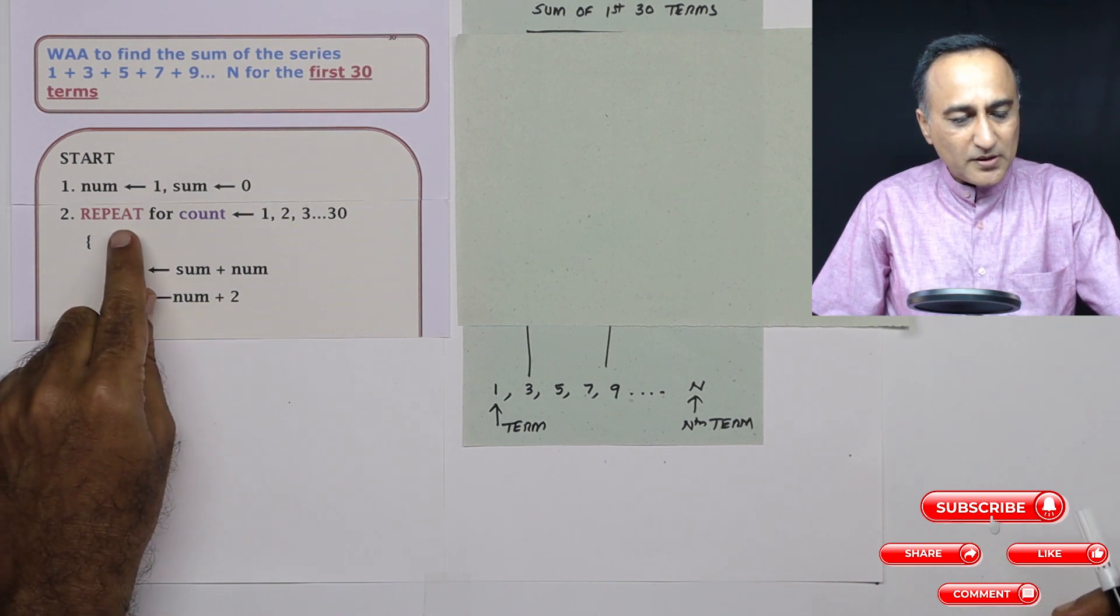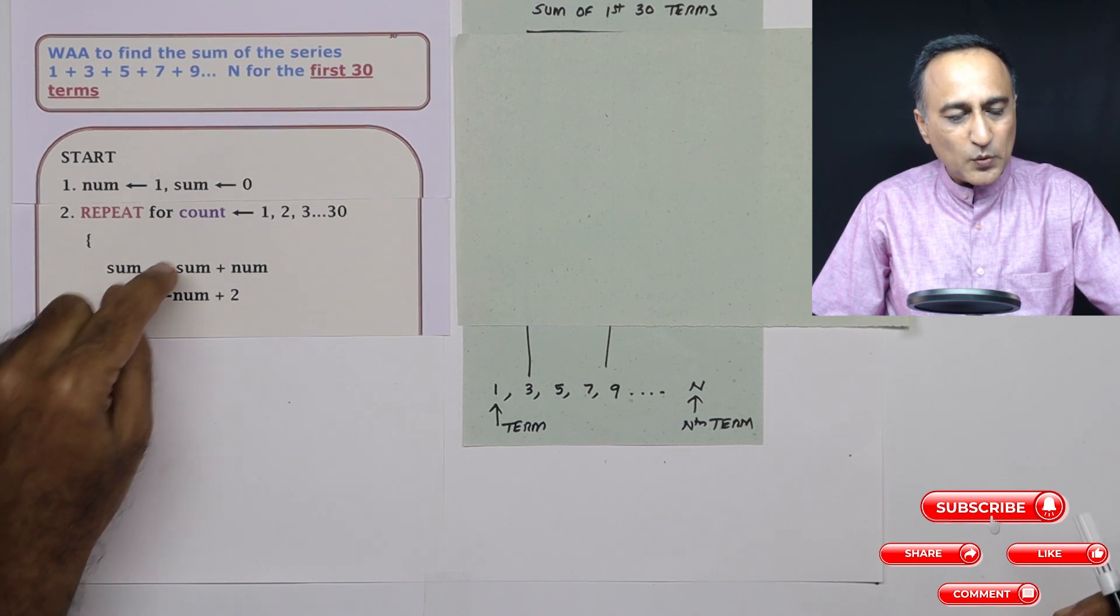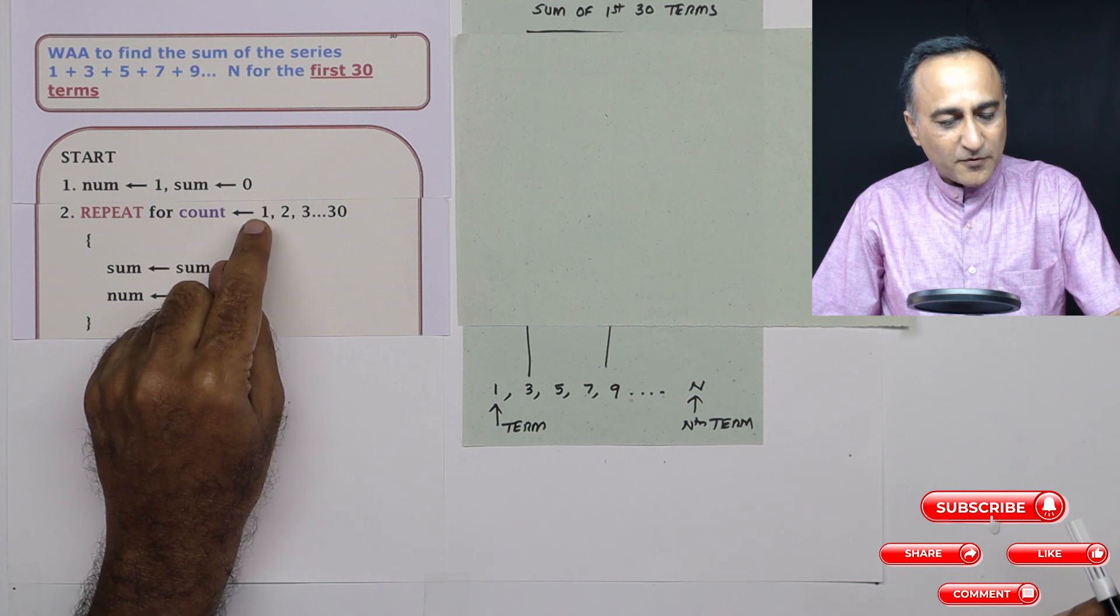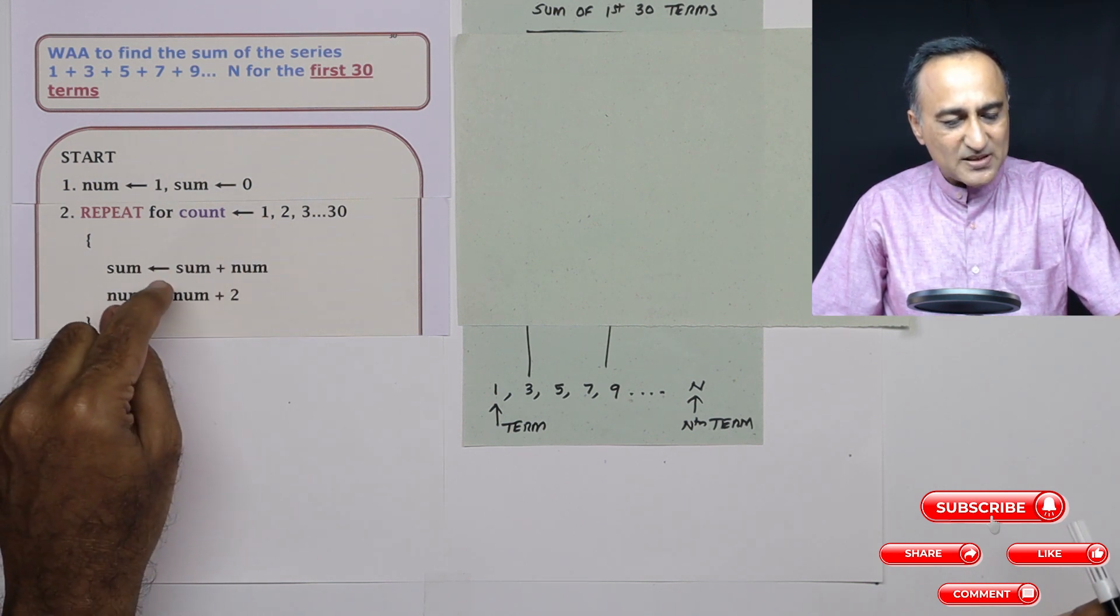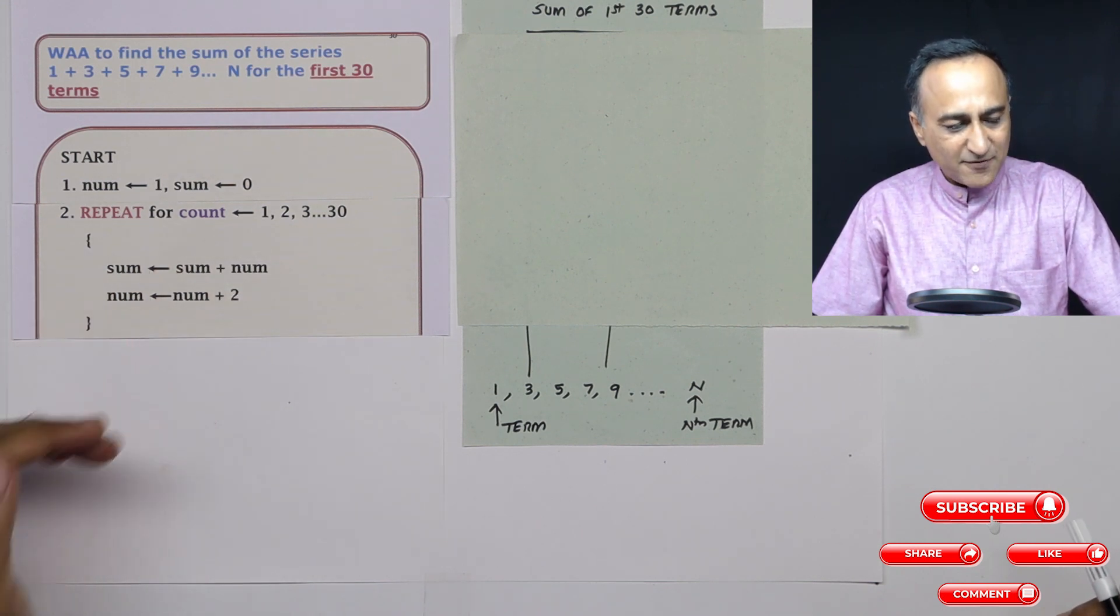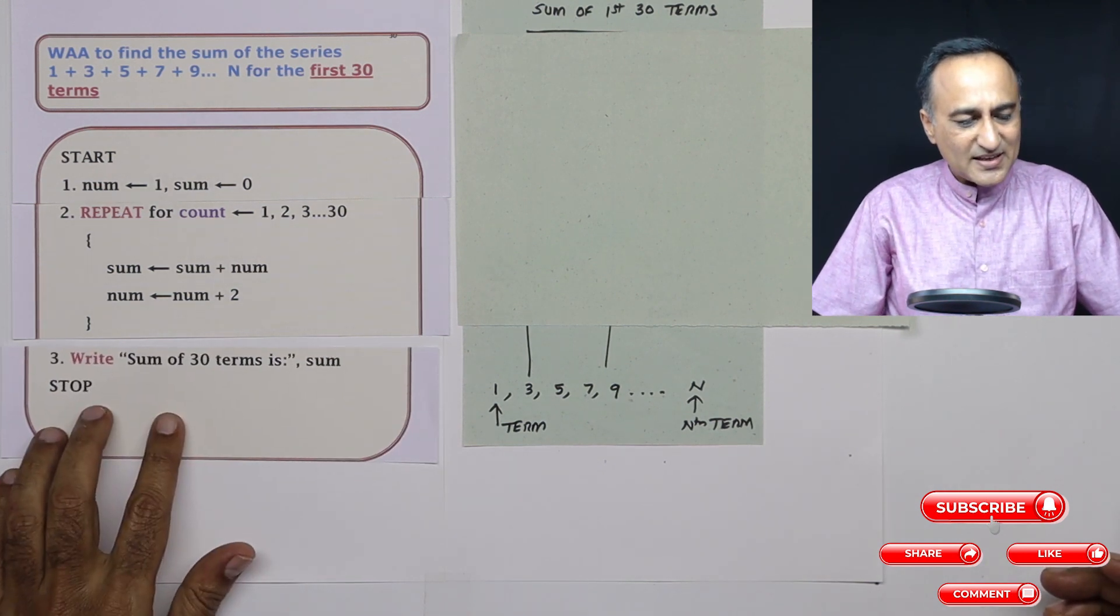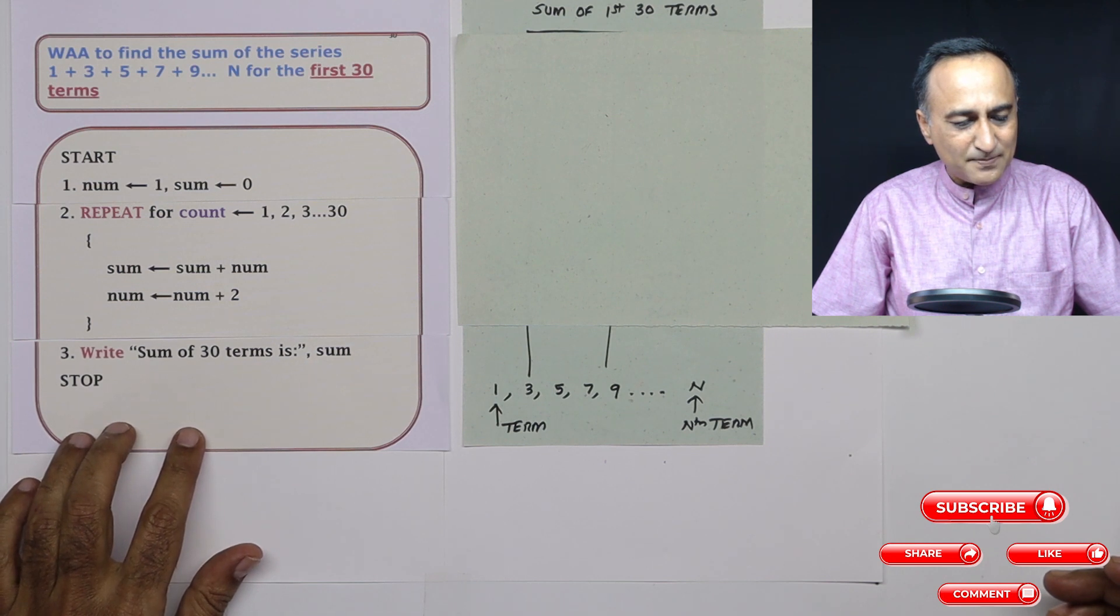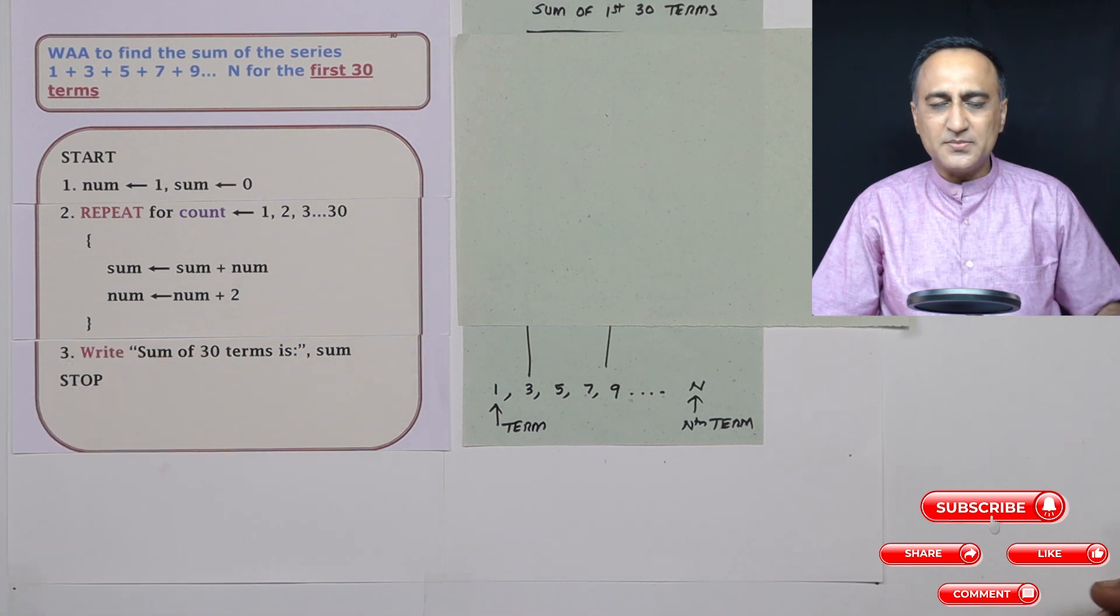Since I know the number of times I am going to do it, the best loop to be used for that is the repeat for count is 1 to 30. So what this repeat for count is 1 to 30 will do is this block of statements, these two, will get executed 30 times. When count is 1 this will happen once, when count is 2 this will happen the second time till count is 30 it will do 30 times, then finally after that step number 3 it will say sum of the 30 terms series is sum.